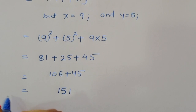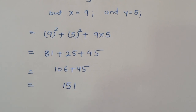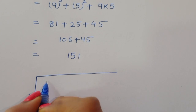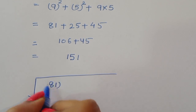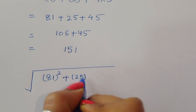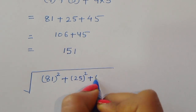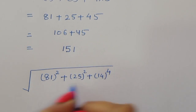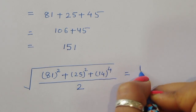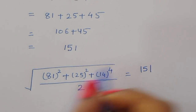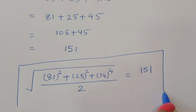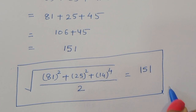Therefore, the square root of (81² + 25² + 14⁴/2) is equal to 151. This is the final solution and the value of this equation. Thank you.